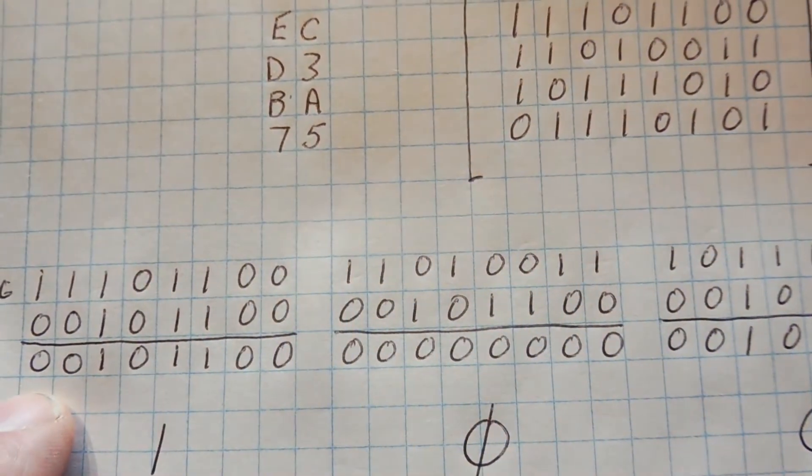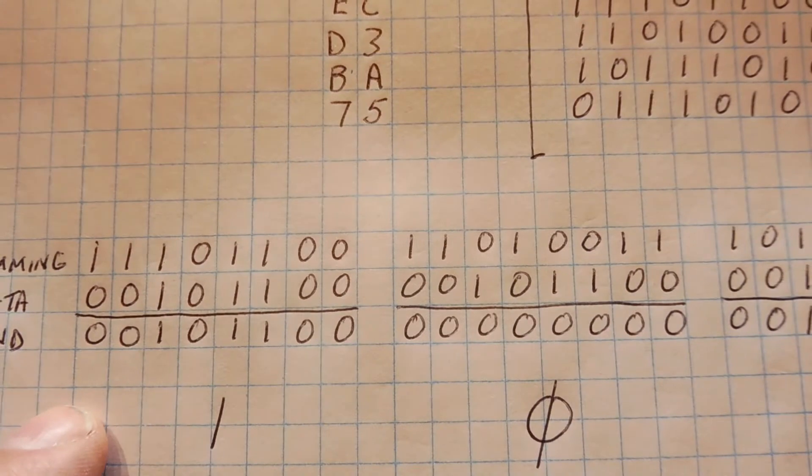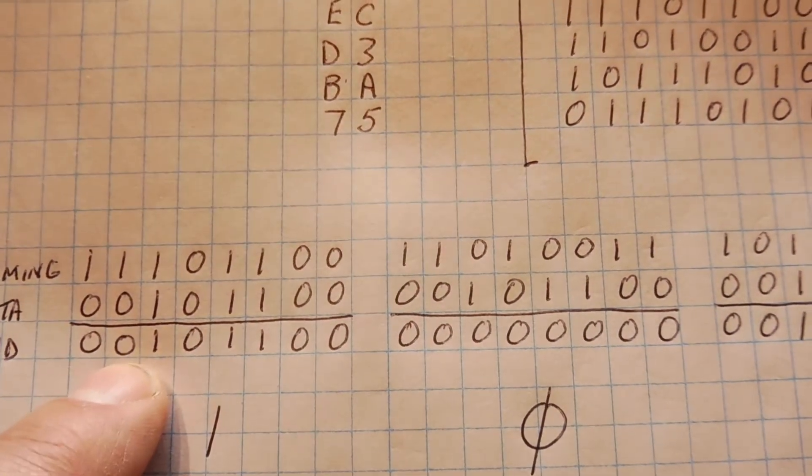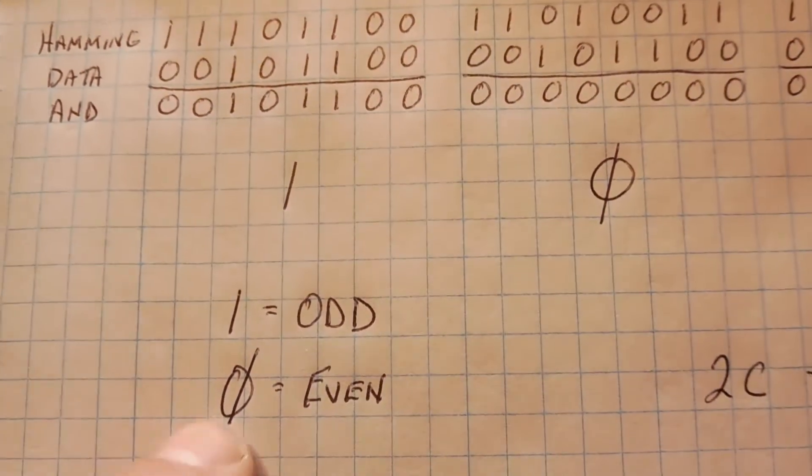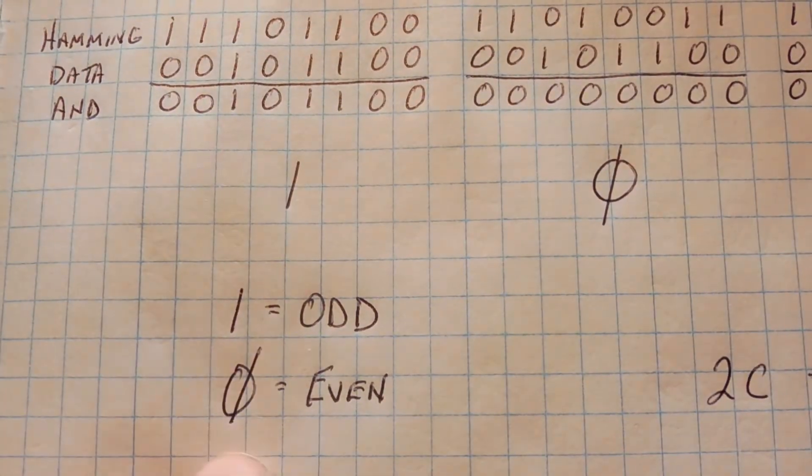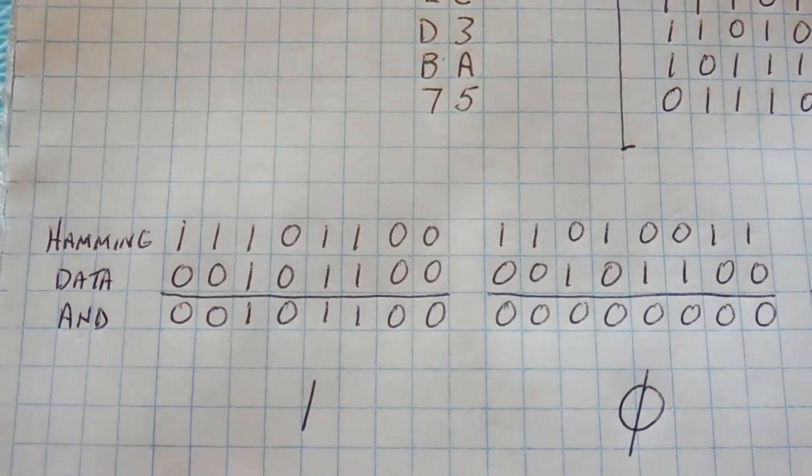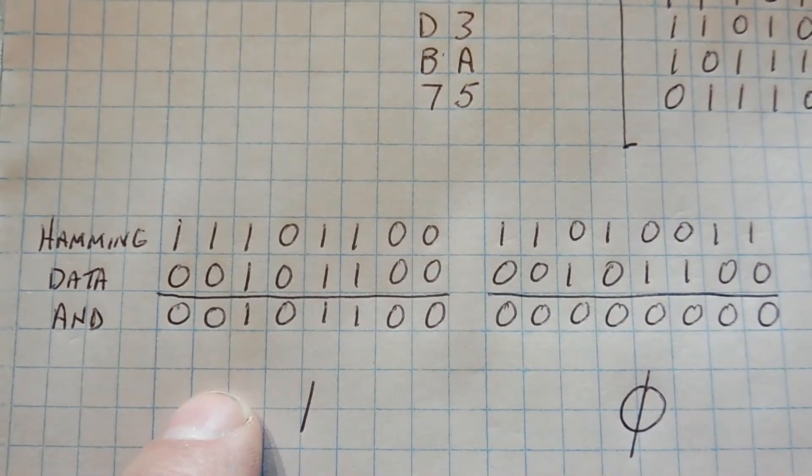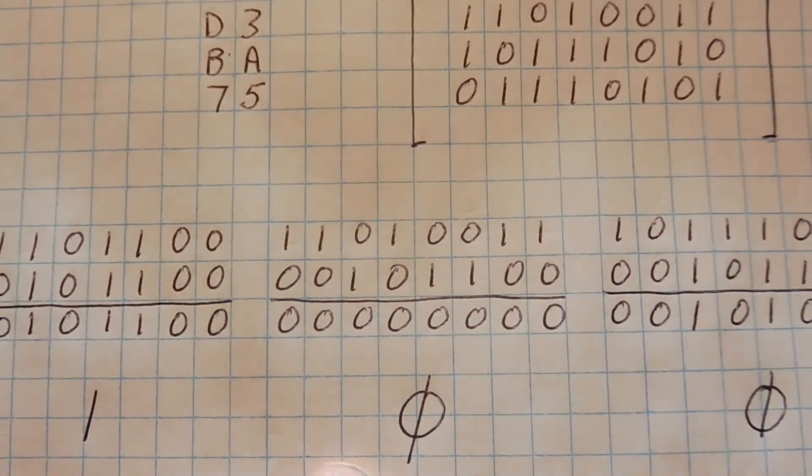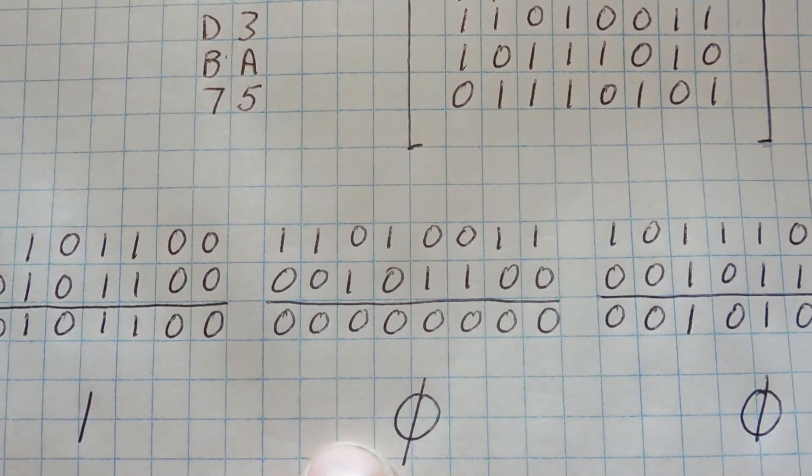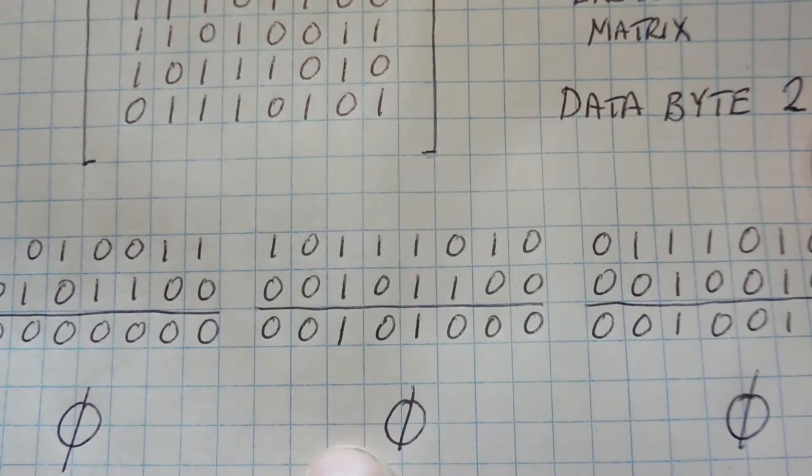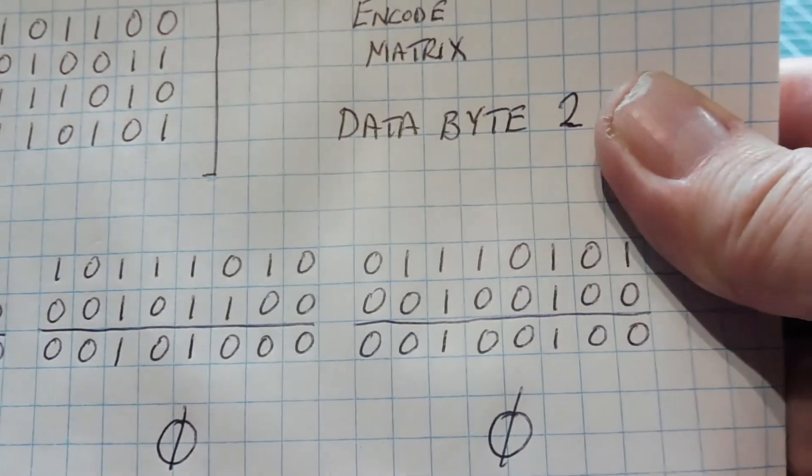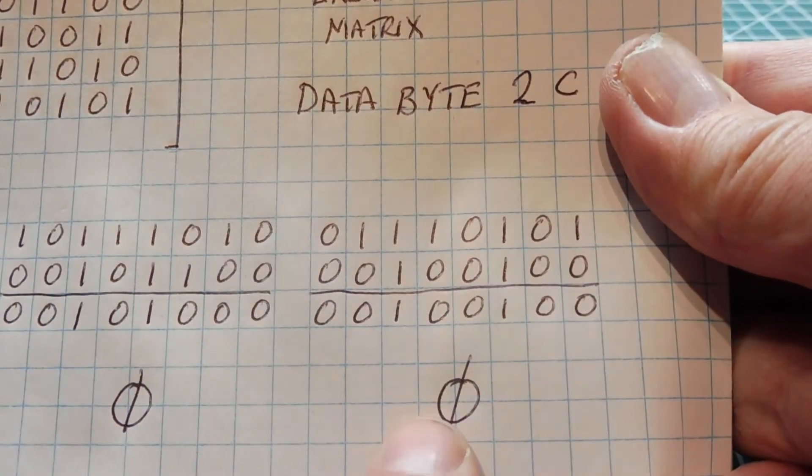Now we're not too interested in the value, but we want to look at how many ones are in each value. So if there's an odd number of ones, then we're going to give it a one value. And if there's an even number of ones, we'll give it a zero value. So in the first one, we have three ones. That's odd. So we'll give it a one. The second one are all zeros. And that turns out to be even. So we'll give it a zero. Third one has two ones. So that's even. So we'll give it a zero. And the fourth one has two ones. And that's even. So we'll give it a zero.